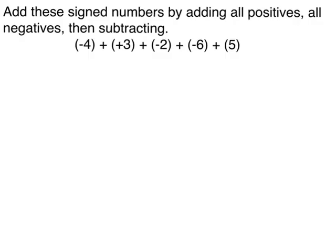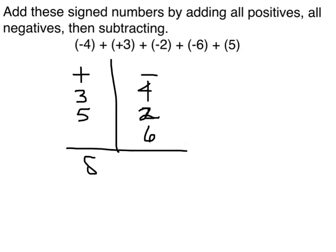All right, so let's try this. We'll have the positive and the negative. All right, here's a 4. Looks like it's really good, and 5. All right, total rows up, 3 plus 5 is 8, 4 plus 6 is 10 plus 2 is 12. All right, so 12 minus 8 is 4, and because the 12 was negative, my answer is going to be negative 4.